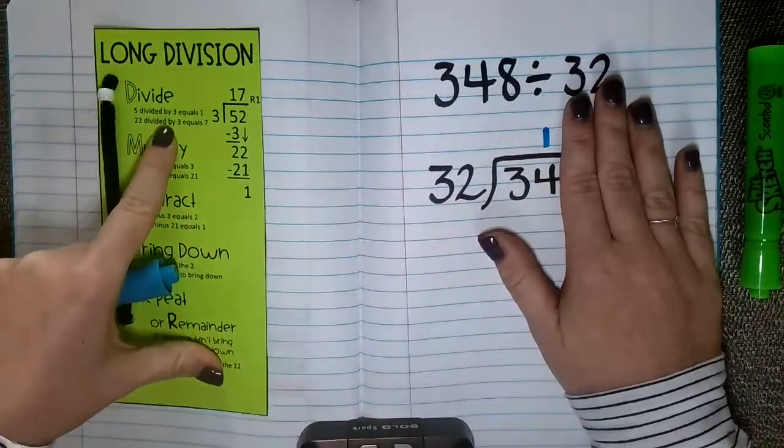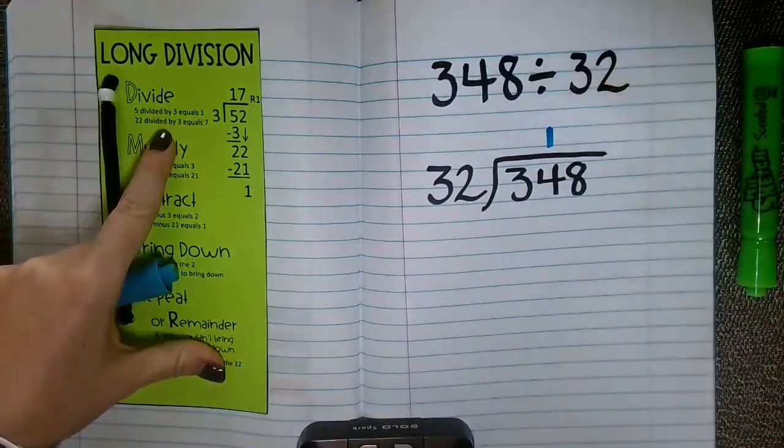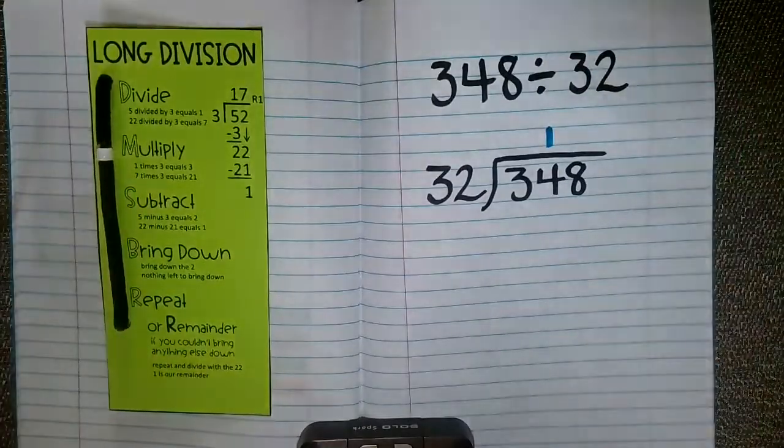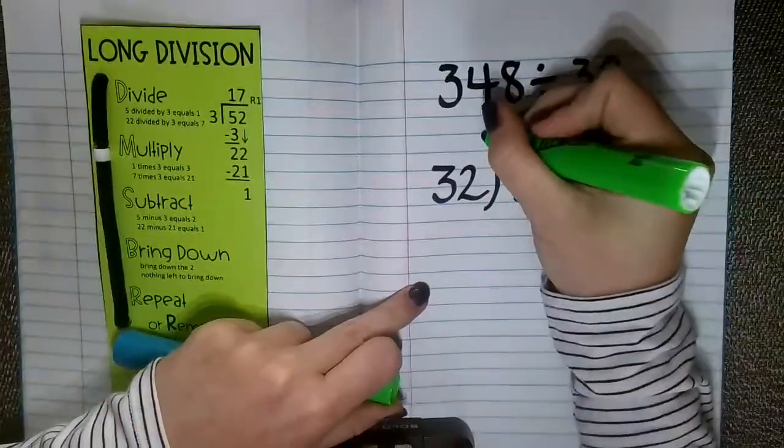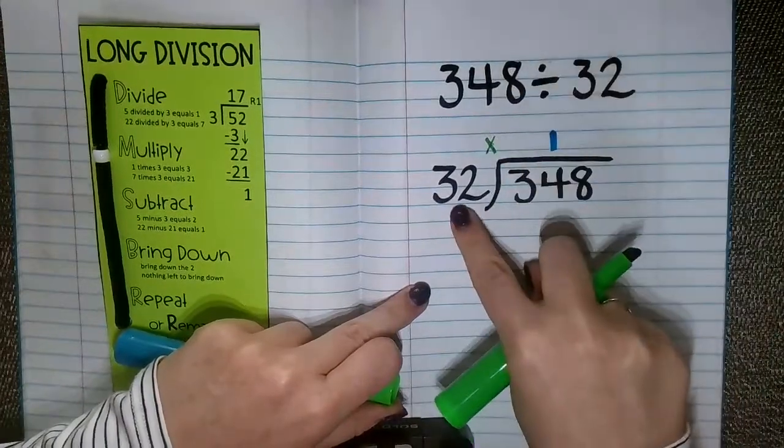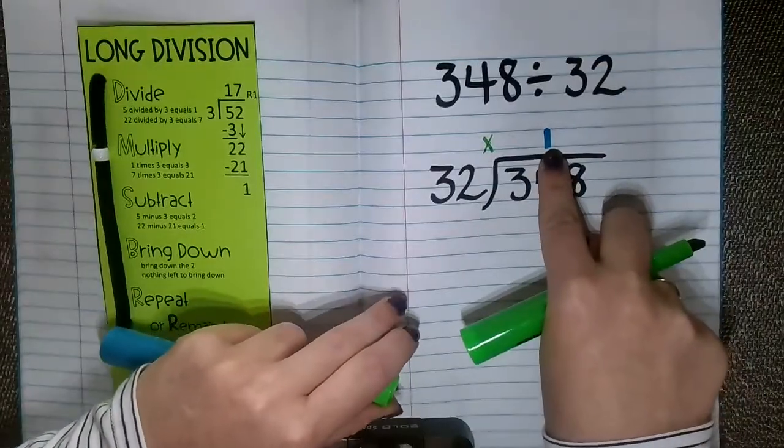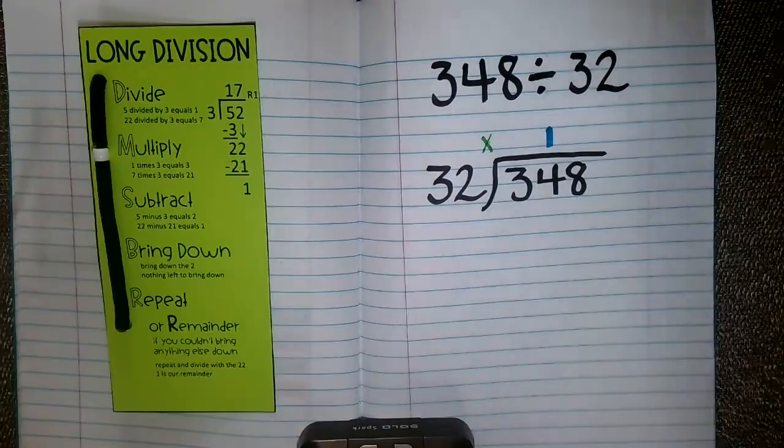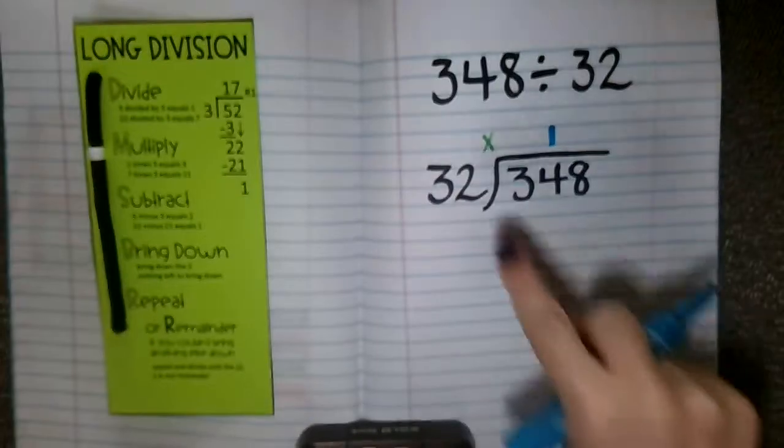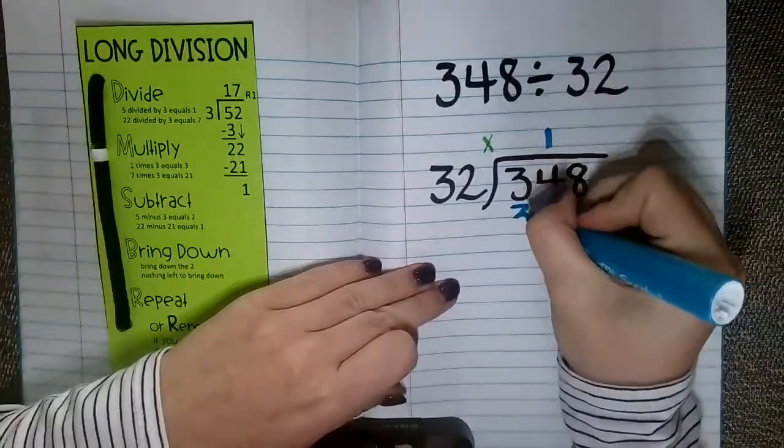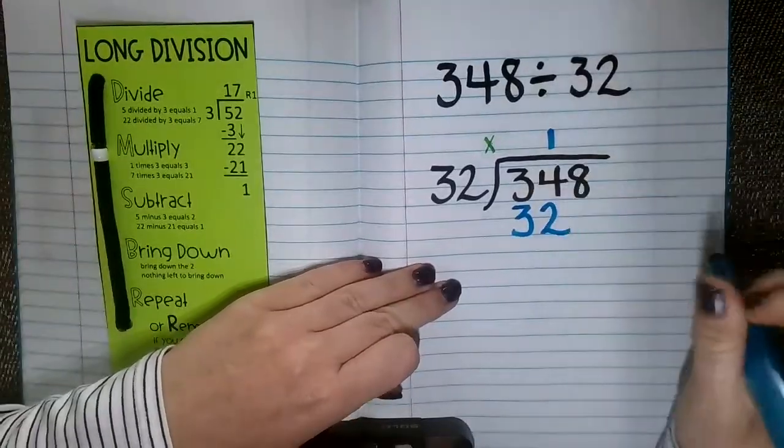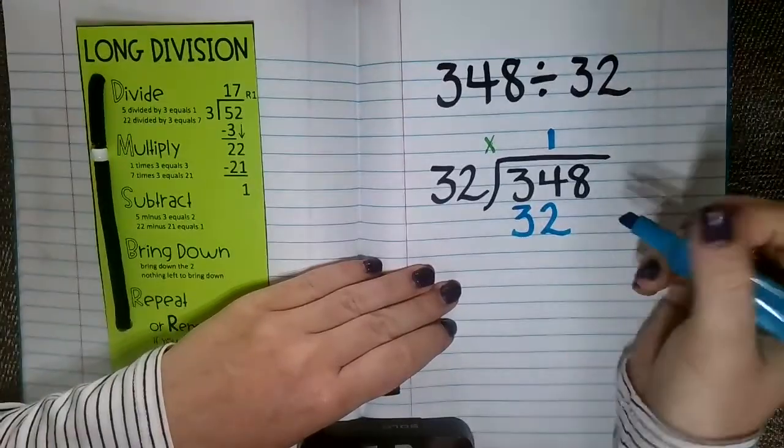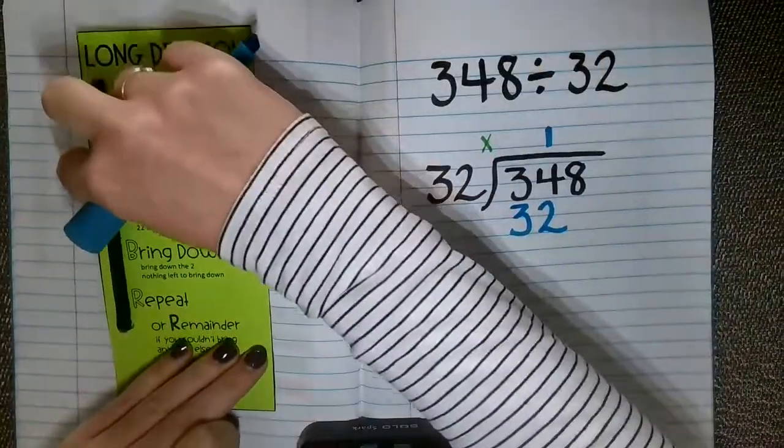All right. So if I'm looking at my next step in the long division process, I am going to move my bead down, and I am going to multiply. So when I multiply, I'm going to take my divisor, and I'm going to multiply by that number that I just said went into my dividend, or part of my dividend. So 32 times 1 equals 32. And again, it's really important that we line up our place values.